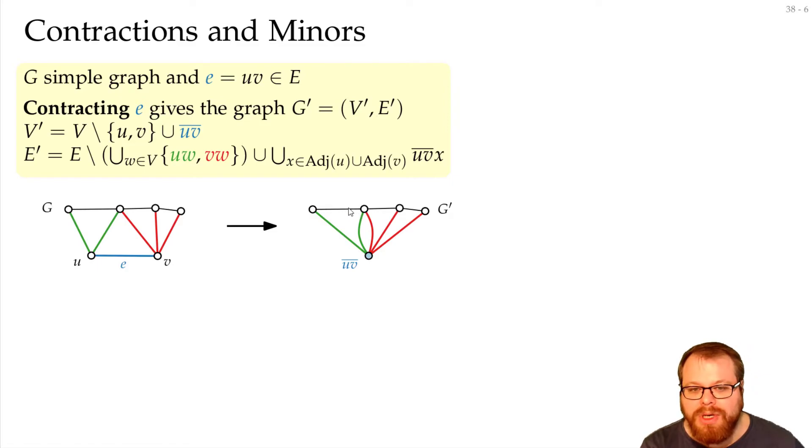There's one problem, we still have this multi-edge here, which we don't want, so the multi-edges are merged, and then this is the contraction of the edge e from our graph g.